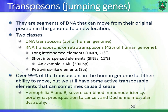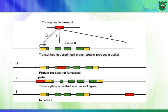How do transposons cause diseases? They disrupt genes. A transposon from one chromosome can jump into a certain region, and if it lands within or inside a gene, it can disrupt it, resulting in production of a faulty non-functional protein. It can also jump into a region near a gene that regulates protein coding, causing a change in the expression or activity of that gene. If it jumps far away from genes, it would have no effect.